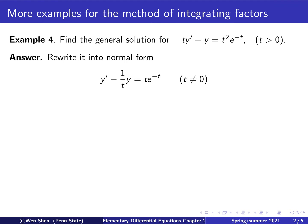As we have done before, the first step is to rewrite the equation into the normal form — we want a coefficient of 1 in front of y prime. Therefore, we divide the equation by t, giving us y prime minus 1 over t, and the right-hand side divided by t is t e to the negative t.